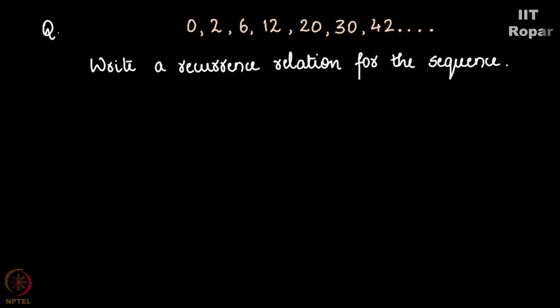Consider this sequence: 0, 2, 6, 12, 20, 30, 42 and so on. Now the question is you have to write a recurrence relation for this sequence. Earlier you were given the recurrence relation and two terms and had to find other terms. But in this question you have been given the sequence and you have to find out the recurrence relation.